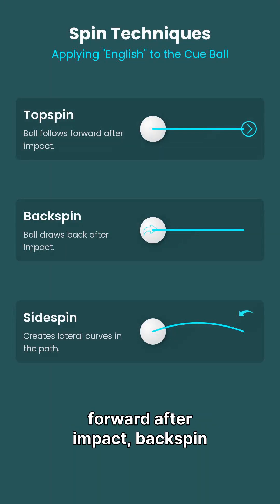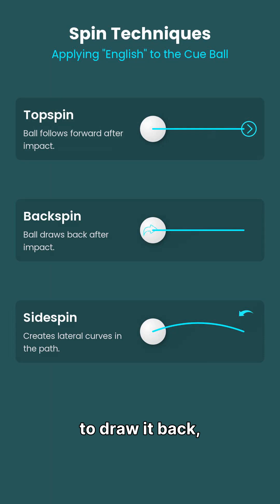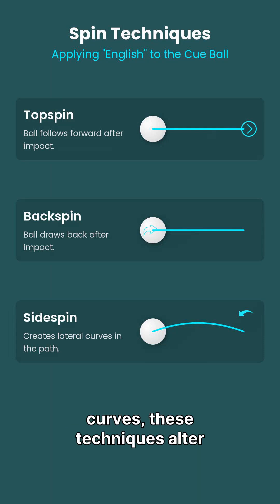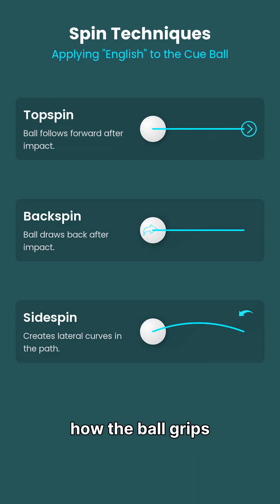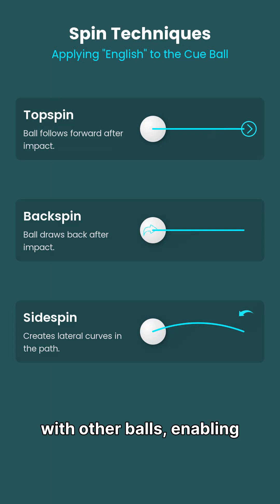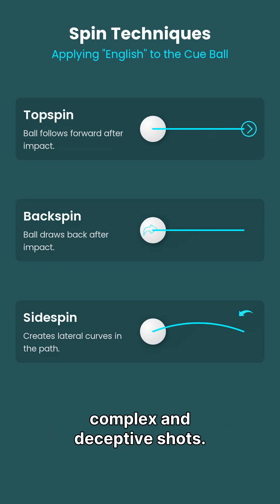Whether applying topspin to make the ball follow forward after impact, backspin to draw it back, or sidespin for lateral curves, these techniques alter how the ball grips the felt and interacts with other balls, enabling complex and deceptive shots.